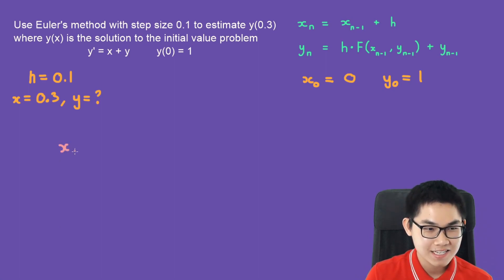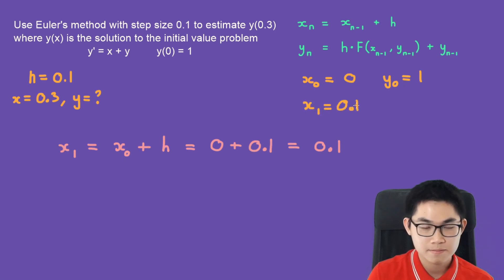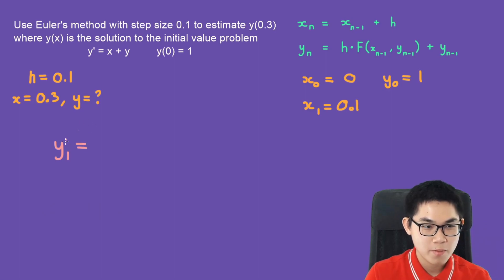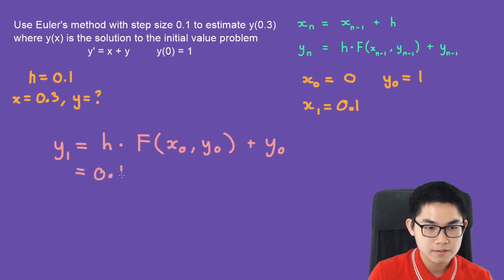Now, let's use the formula. We're going to take our first step. And we get x at 1. And x at 1 is equal to x at 0 plus h. And x at 0 is 0 plus h, which is 0.1. And that gives you 0.1. What is y at 1? Well, y at 1 is equal to h times f(x_{n-1}, y_{n-1}) plus y_{n-1}. That's going to be x0, y0 plus y0. So h is 0.1 times f. And what is x0? x0 is 0 here. y0 is 1 plus y0, which is also 1.